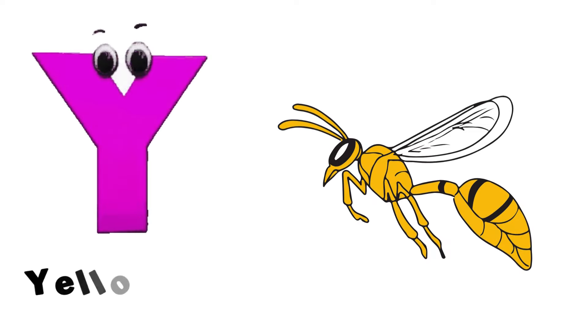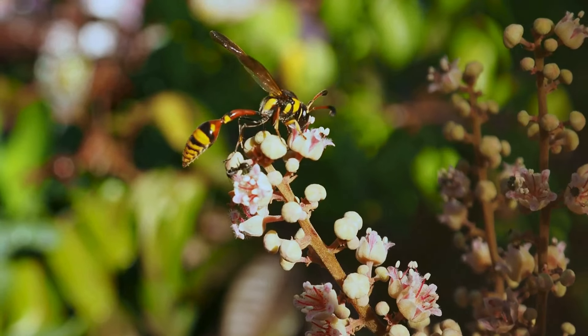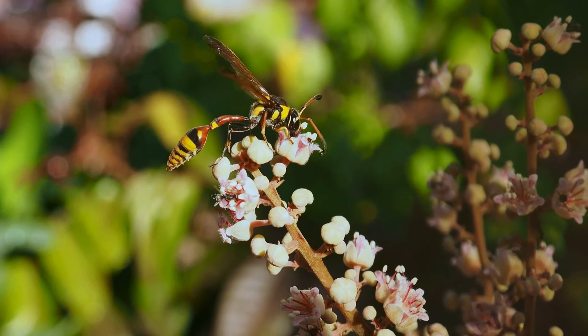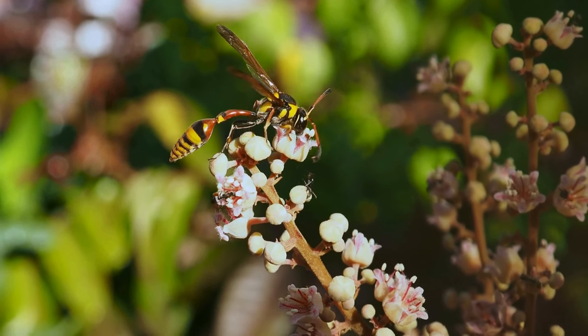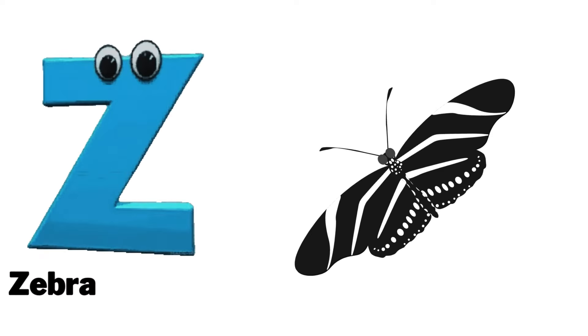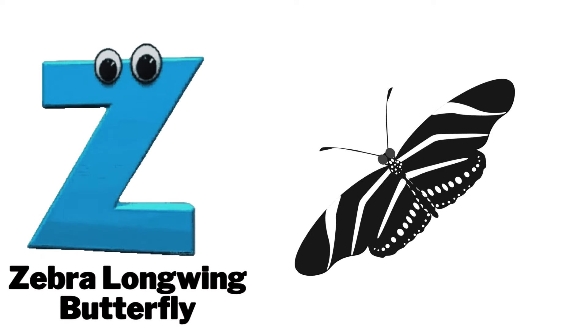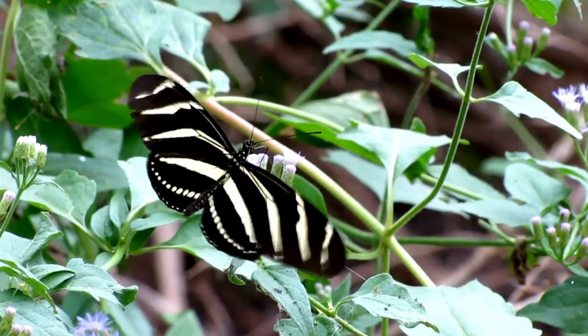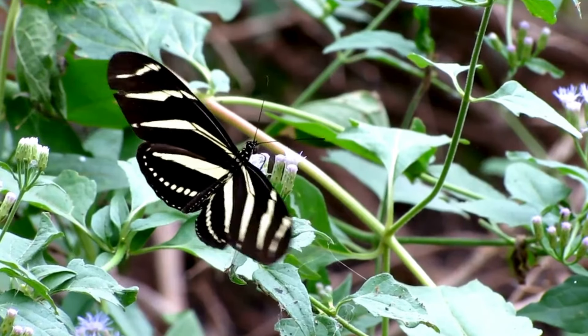Y is for Yellow Jacket. G, G. Yellow Jacket. Z is for Zebra Longwing Butterfly. Z. Zebra Longwing Butterfly.